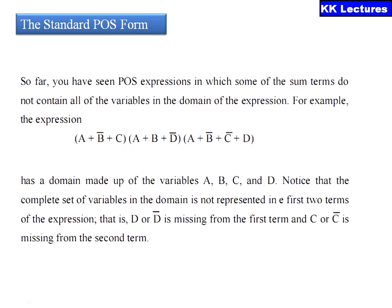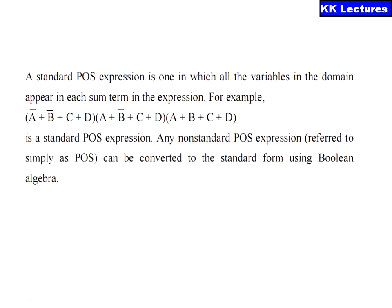The standard POS form: as with the standard SOP, in the standard POS each and every term must contain all the variables of the given function in complemented or uncomplemented format. In the given example, the first two terms contain only three variables whereas the last term contains four. To convert to standard POS form, the first two terms also need to have the fourth variable — D is missing from the first term and C is missing from the second. A standard POS expression is one in which all variables in the domain appear in each sum term, where each and every term is called a max term. Here, a normal variable takes the value of 0 and a complemented variable takes the value of 1.